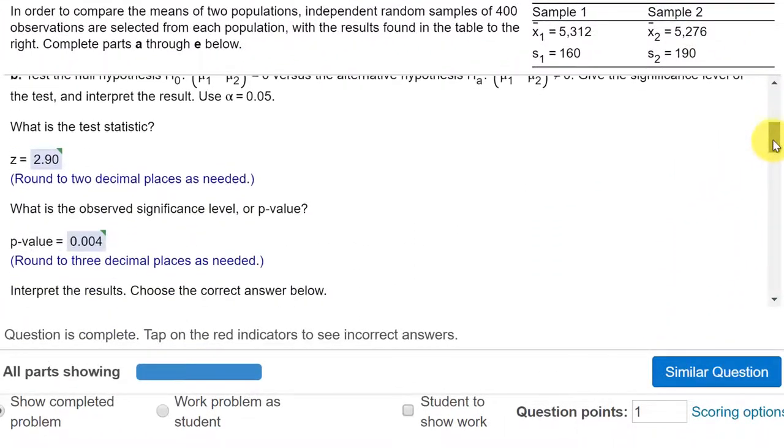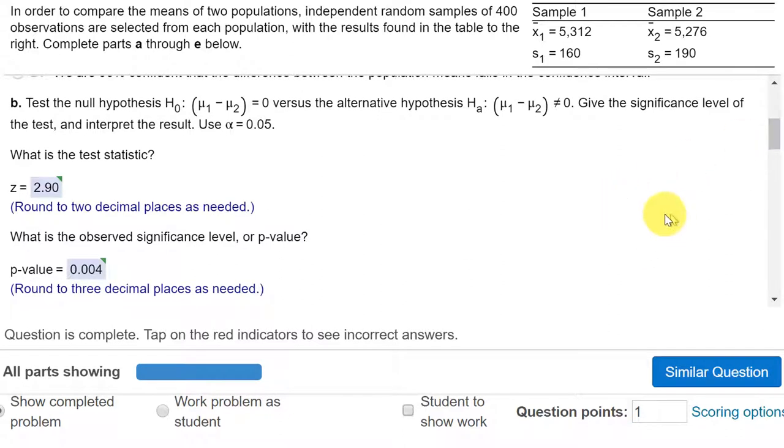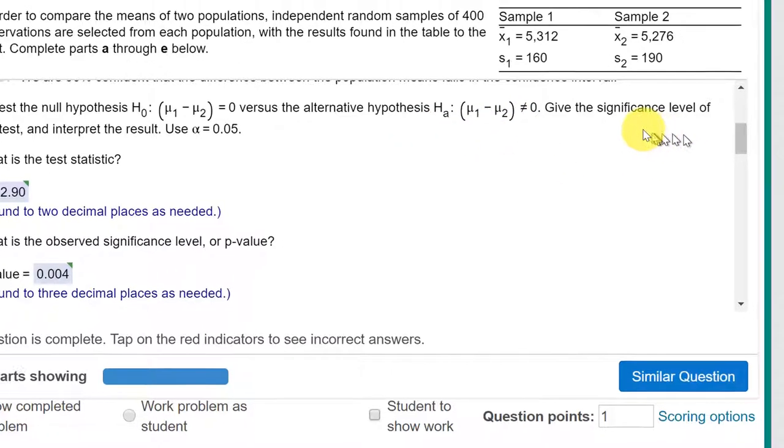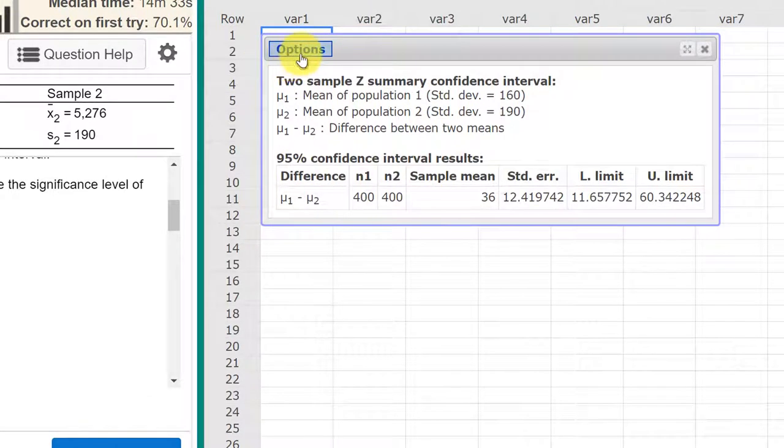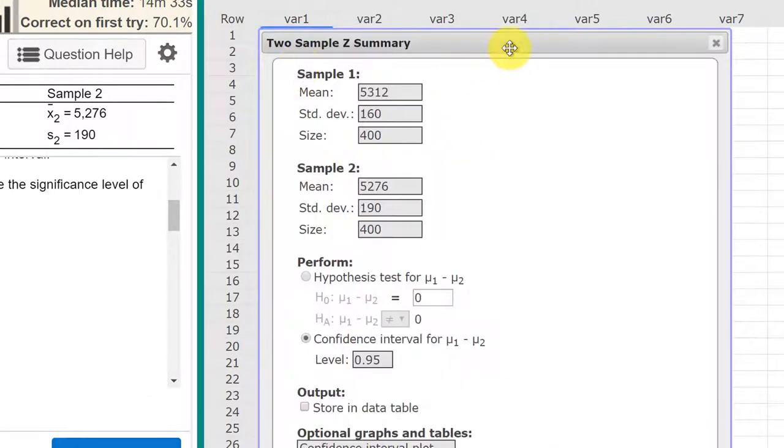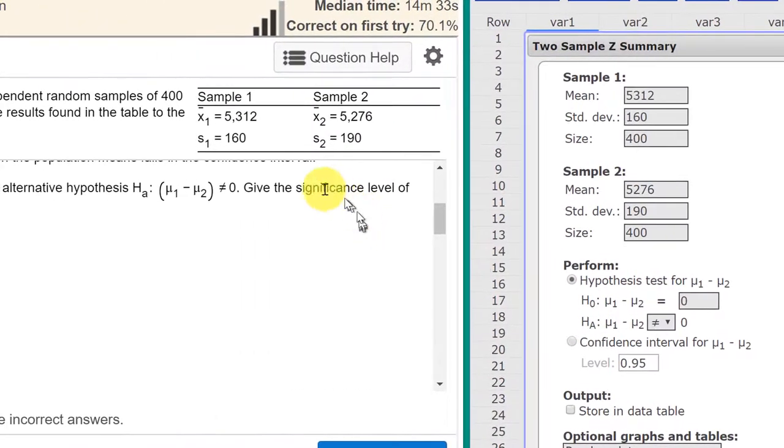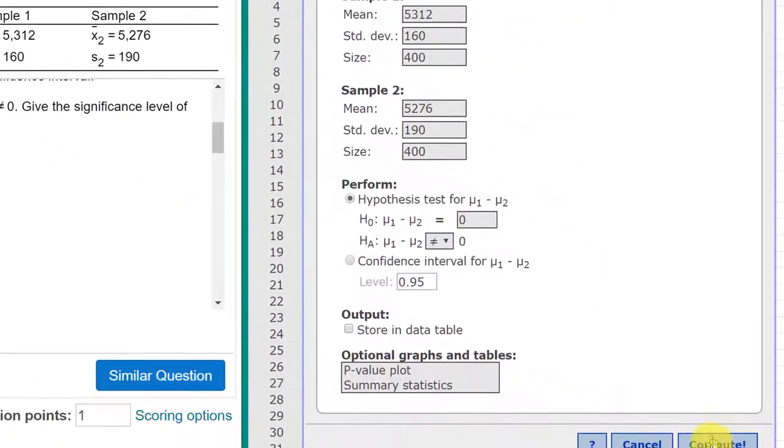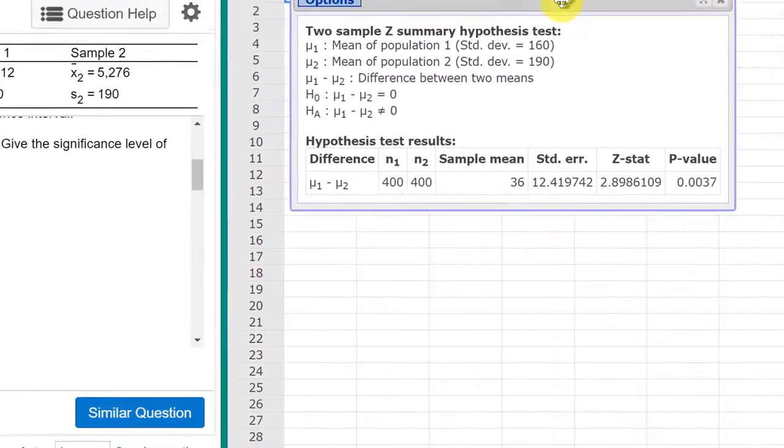Part B says, test the null hypothesis mu1 minus mu2 equals zero versus the alternative mu1 minus mu2 not equal to zero. So all we need to do, we don't have to reenter the data, we just click on options, edit, and it brings up our dialog box. This time we check we want the hypothesis test for the mean difference. The difference for the null is zero. And the alternative has a not equal operator. So we select the not equal operator and we click compute.